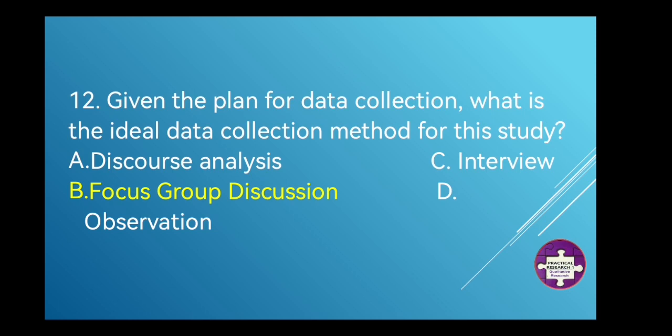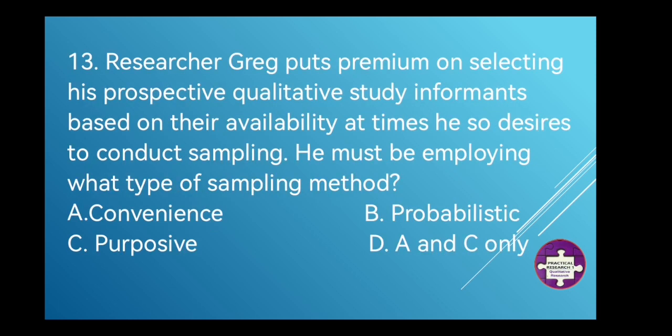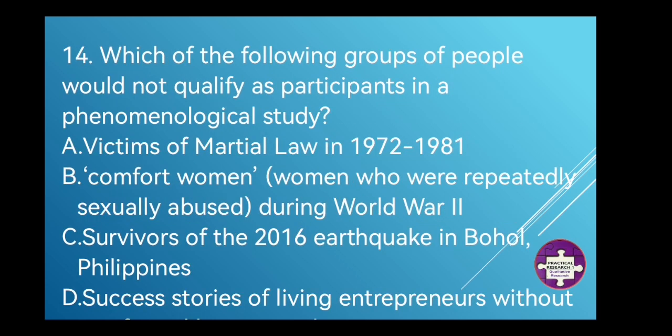For number 13, researcher Greg puts premium on selecting his prospective qualitative study informants based on their availability at times he so desired to conduct sampling. He must be employing what type of sampling method? A. Convenience, B. Probabilistic, C. Purposive, or D. A and C. The correct answer is A. Convenience sampling method.